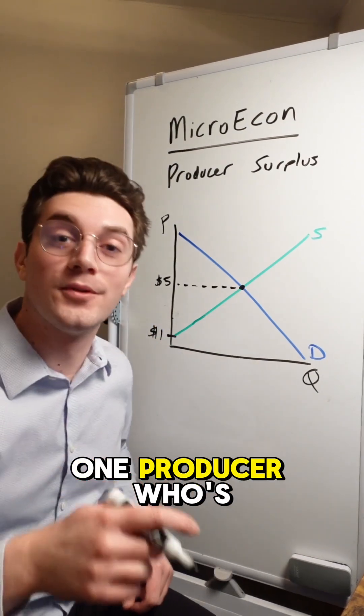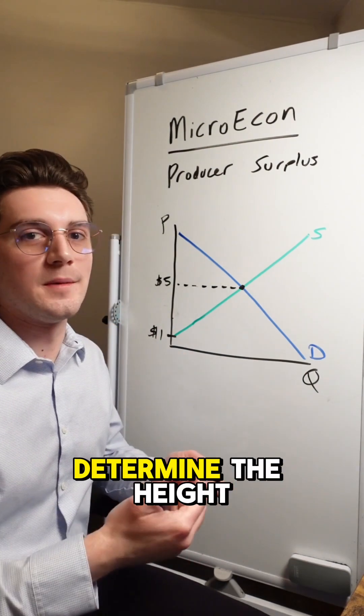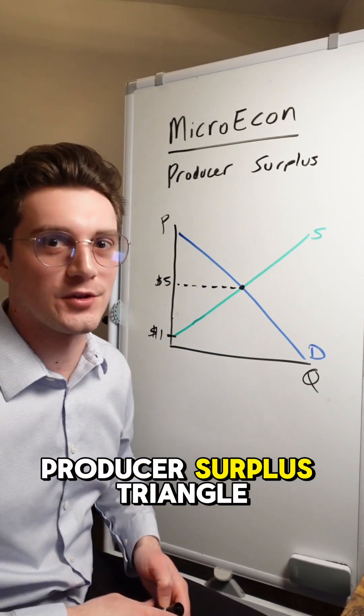Conceptually, this is the one producer who's willing to sell a hot dog for the lowest price. And they're going to determine the height of our producer surplus triangle.